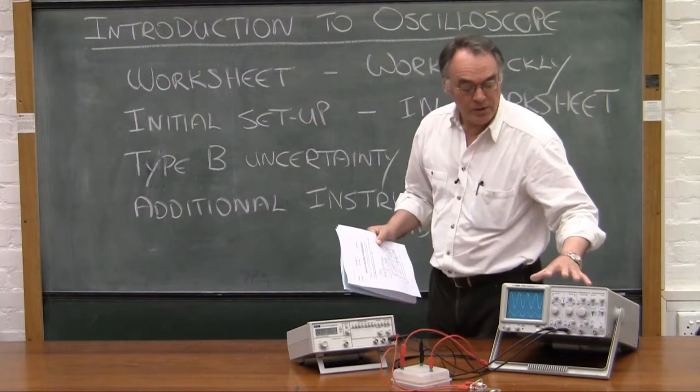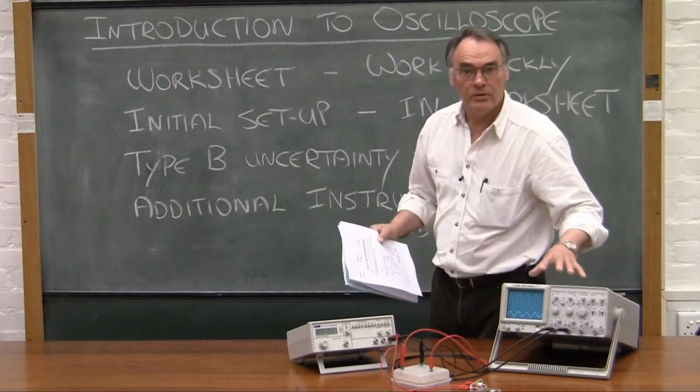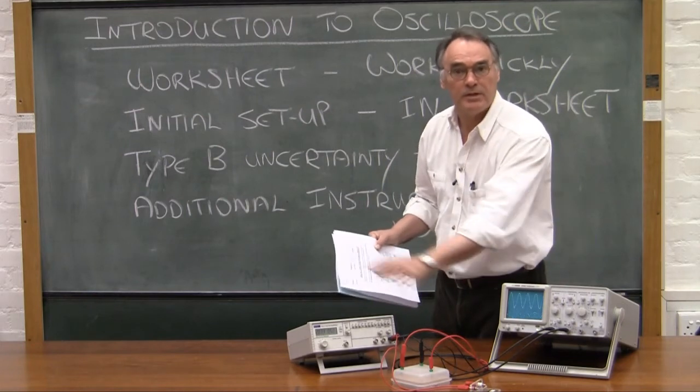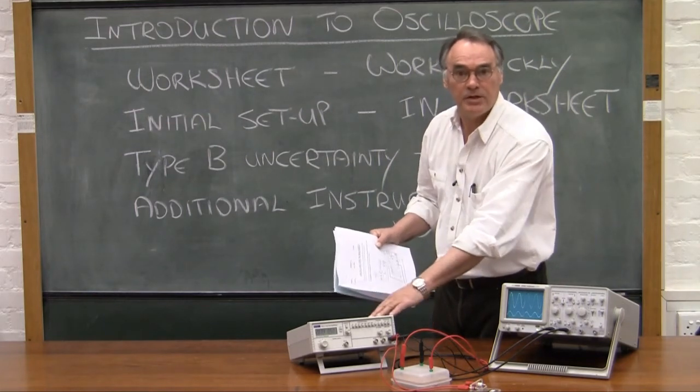Now remember that when you adjust the oscilloscope, you do not change the characteristics of the signal. All you do is you use the oscilloscope to measure whatever it is that the function generator has produced.